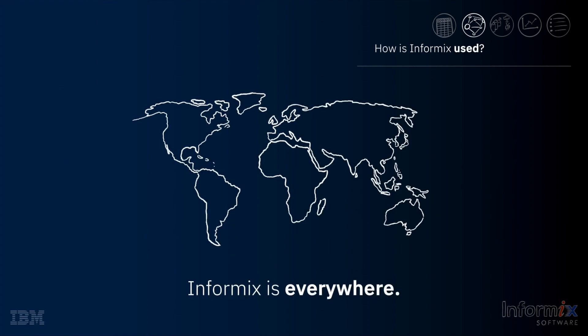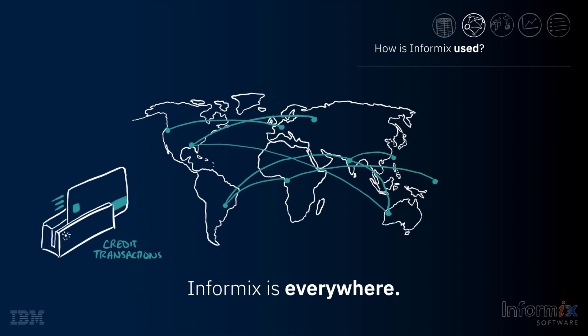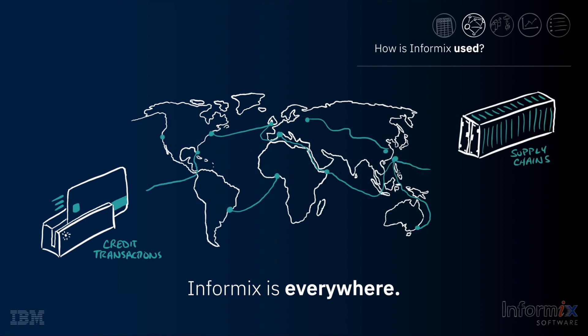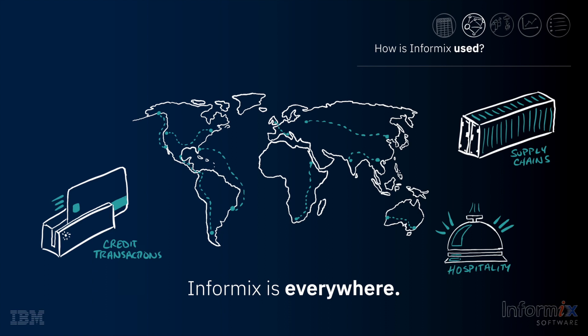When you look at where and how Informix is used, it is literally everywhere in the world. It is used to validate and route transactions from one of the largest credit card issuers and packages carried by one of the world's largest shipping companies. It is used to manage distributed supply chains, including blockchain implementations, and to make the hotel guest experience better at some of the world's largest hotel chains. Informix is a powerful, yet invisible part of our daily lives.